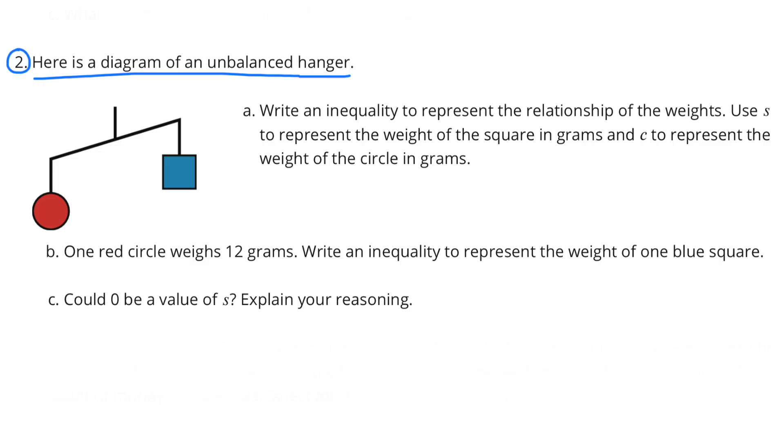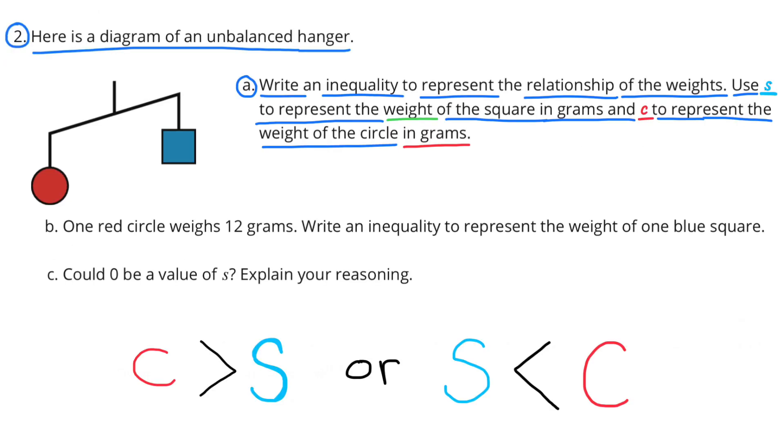Number 2. Here is a diagram of an unbalanced hanger. Part A: Write an inequality to represent the relationship of the weights. Use S to represent the weight of the square in grams, and C to represent the weight of the circle in grams.